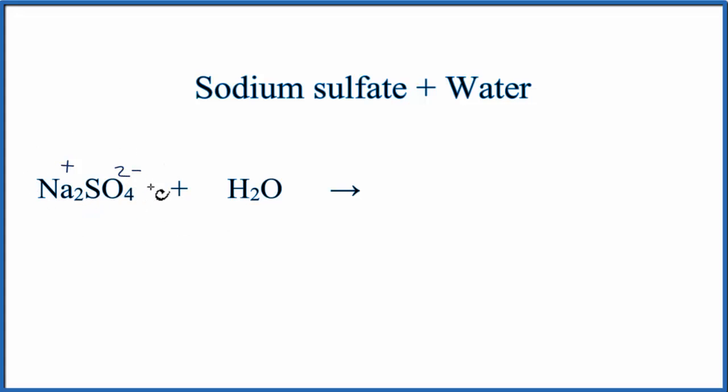We take solid sodium sulfate plus liquid water, and this dissolves. It dissociates into its ions, so we end up with Na+ and then the sulfate, SO4 2-.